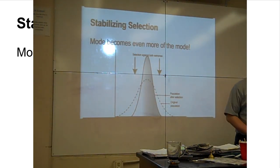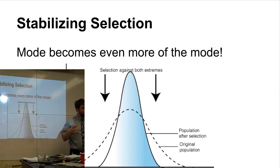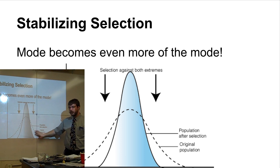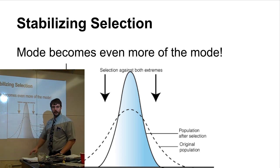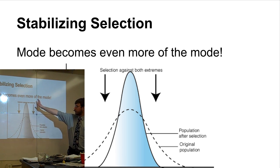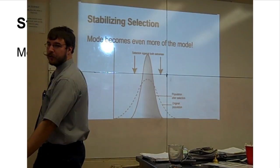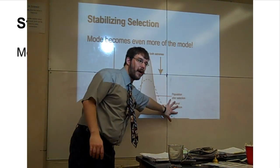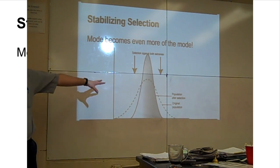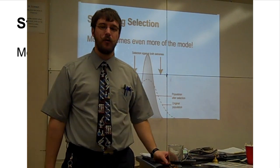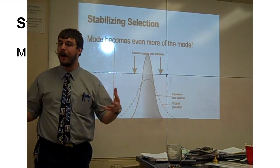Ariel mentioned that female lizard body size was under stabilizing selection. The mode just becomes even more pronounced. Being too big as a female lizard is bad, and being too small is also a problem — so the medium, average-sized ones are preferred. That's stabilizing selection. This can actually limit genetic diversity over time because it removes the two extremes. That can be dangerous if there's an environmental change, since genetic variation really matters for species survival.